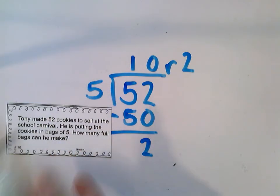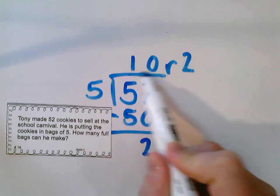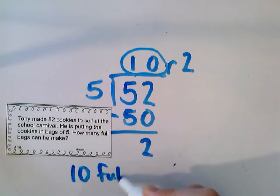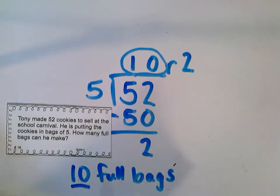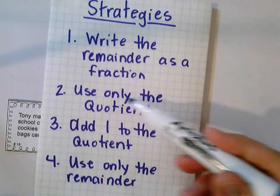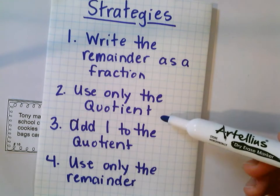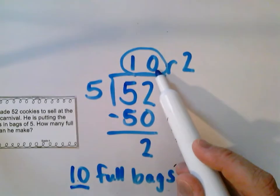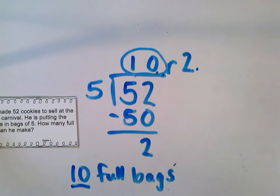My question said how many full bags can he make? I have these 2 left over — they can't make a full bag. But these 10 can. I can make 10 full bags of cookies. The question isn't asking me about how many I have left over; it's just asking how many full bags I can make. So the answer is 10. This is the strategy of only using the quotient — I wanted to know how many complete sets I could make. The quotient is 10, the remainder is 2. Just using the quotient, nothing with the leftovers.